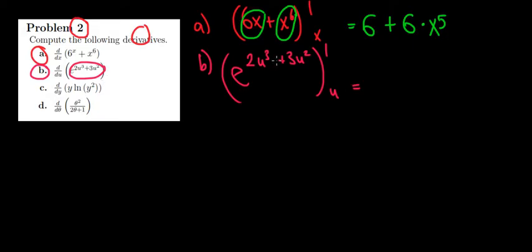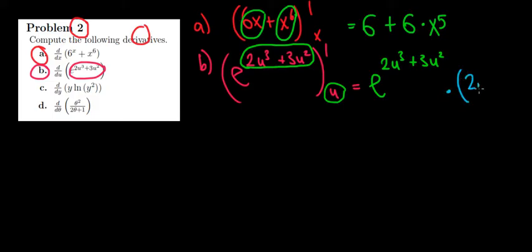So we're differentiating this entire thing. And what do we have over here? e to an entire power. And that power is an expression of u, an expression of our variable, meaning that we will have to use the chain rule as well. So we have as a result e to that power, e to the power of 2u cubed plus 3u squared, multiplied with the derivative of the power. So we have 2u cubed plus 3u squared derivative with respect to u.